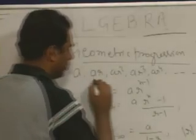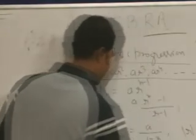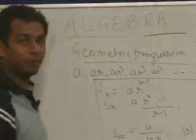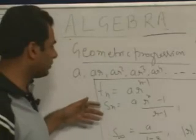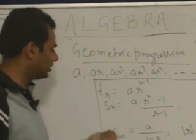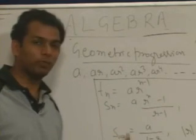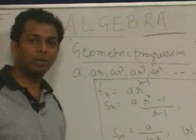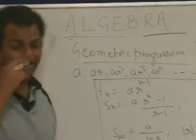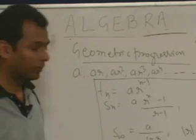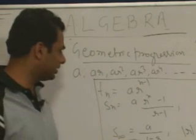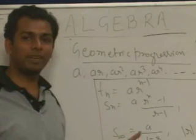These are the three important things. And if you look at the CAT paper, the maximum number of questions have been asked using the formula for sum of infinite terms. We will take a couple of questions based on sum of infinite terms.